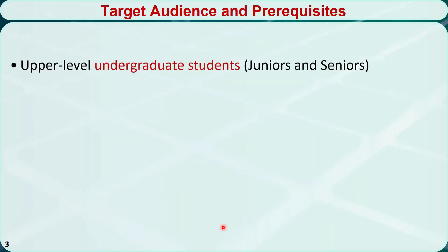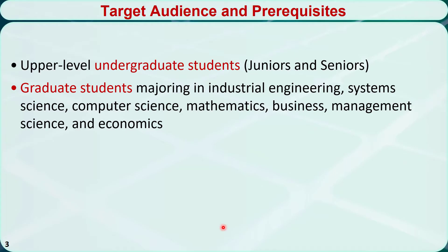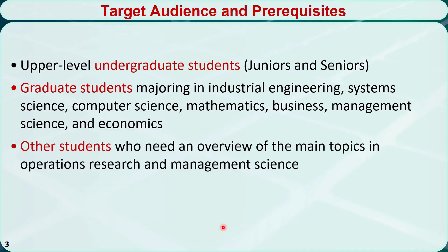This course is intended for junior and senior undergraduate students as well as graduate students majoring in industrial engineering, systems engineering, computer science, mathematics, business, management science, and economics. Other students who need an overview of the main topics in operations research and management science may find the course helpful as well.